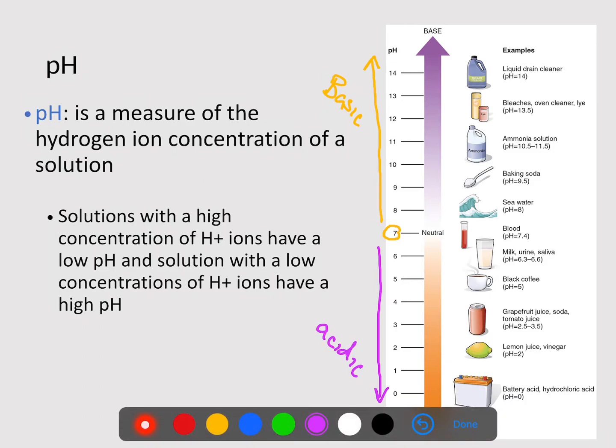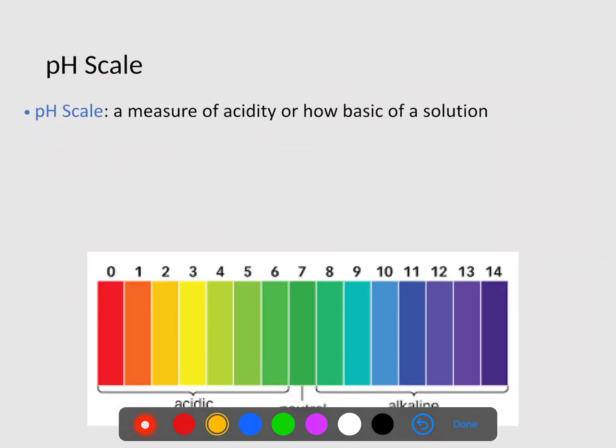So that would be things like battery acid, hydrochloric acid, things along those lines. So solutions with high concentrations of H plus ions have a low pH, more acidic. Solutions with low concentrations of H plus ions have a high pH or are basic. Now, both very basic and very acidic things are both very harmful to you and me.